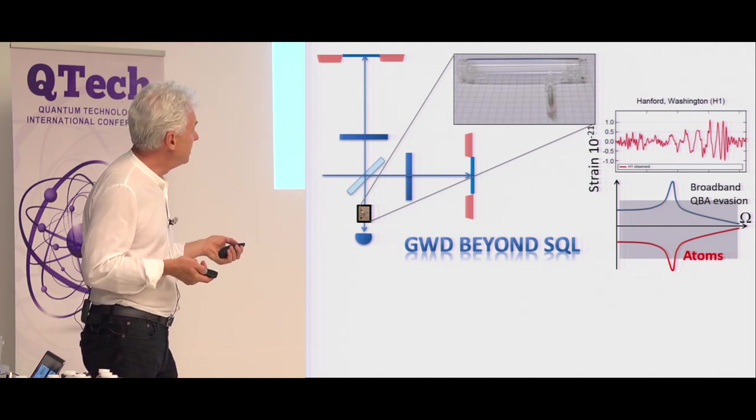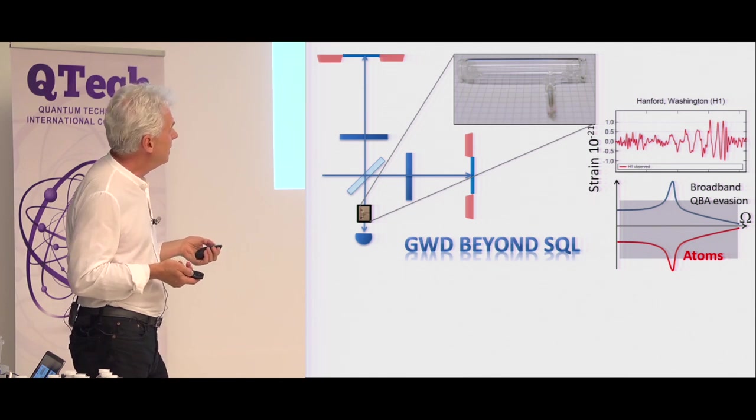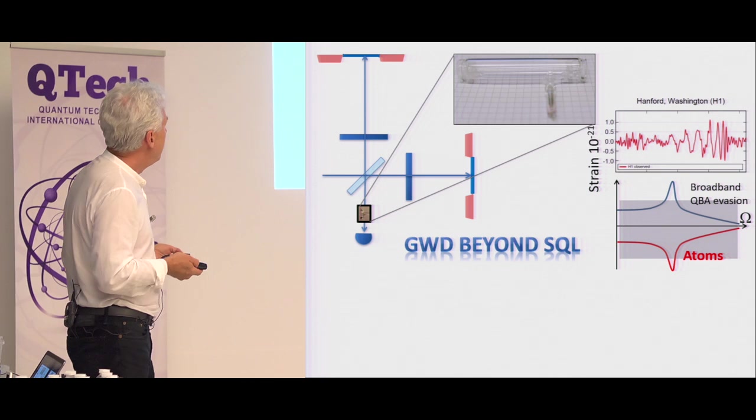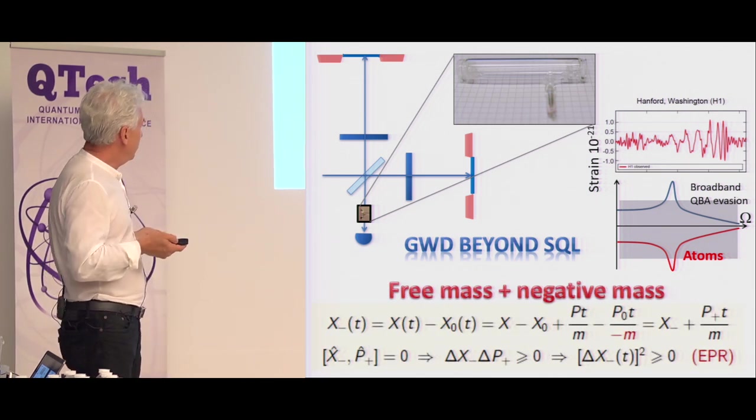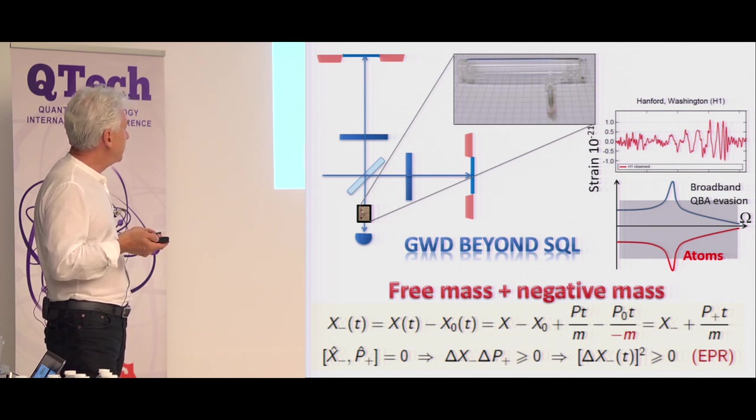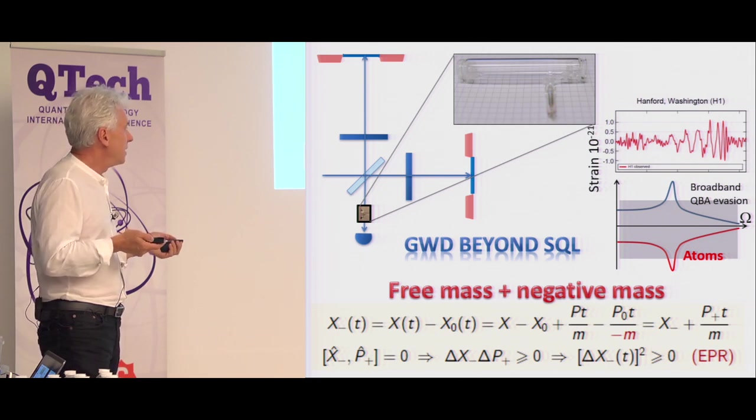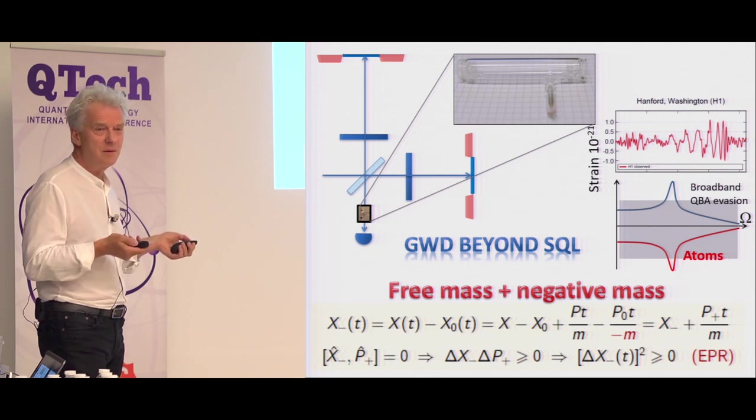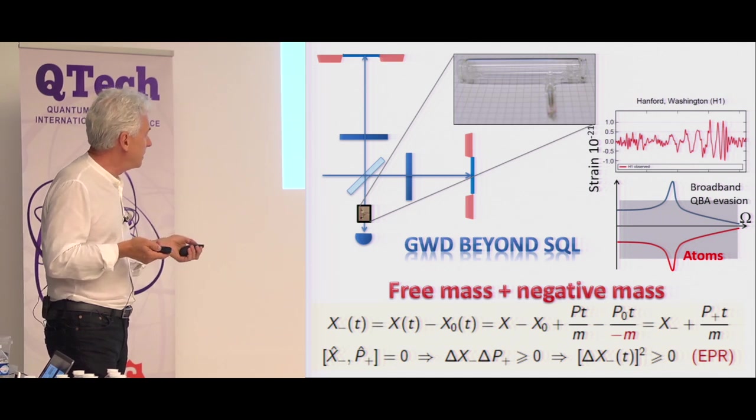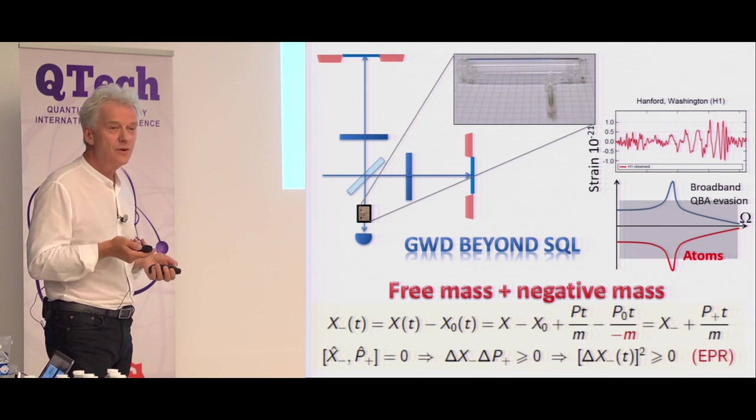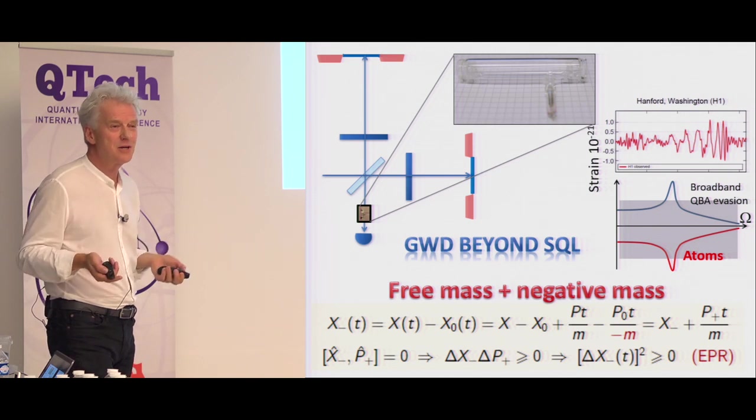And the idea basically is that this is the susceptibility of an oscillator. An oscillator frequency, higher frequency, and 1 over omega squared, lower frequency. And the atoms are supposed to provide the same susceptibility, but inverted because it's a negative mass device. And now, if you look at the measurement result, which you get as a difference between looking at the readout of the gravitational wave detector and the readout of the atomic spin, it's the same thing as I've shown you in the first two slides, but for the free mass. So now, the difference will be the difference between the coordinates, the difference between the momenta times t over m, and if here is a minus, then here you have a plus, and then you have commuting variables which define this measurement result, which means that you can measure it with arbitrary accuracy.